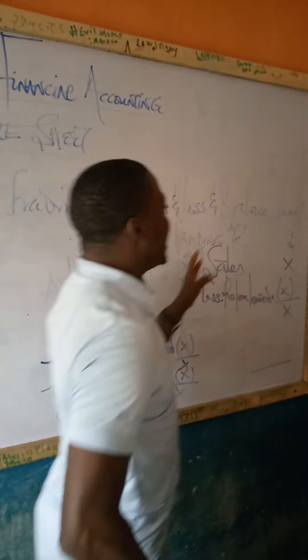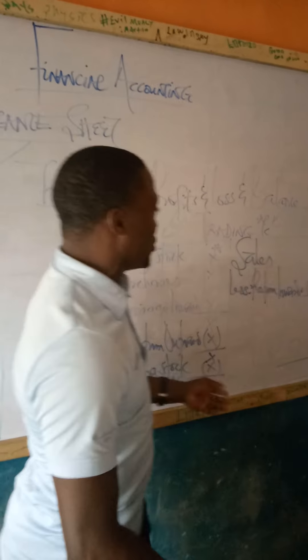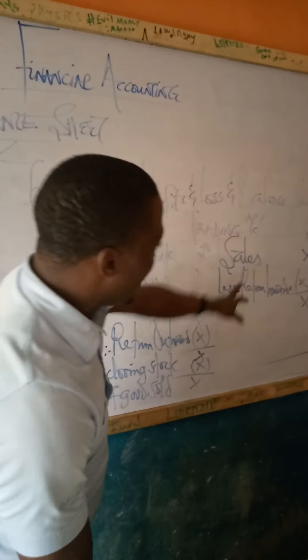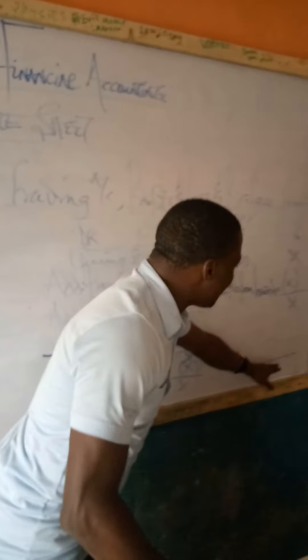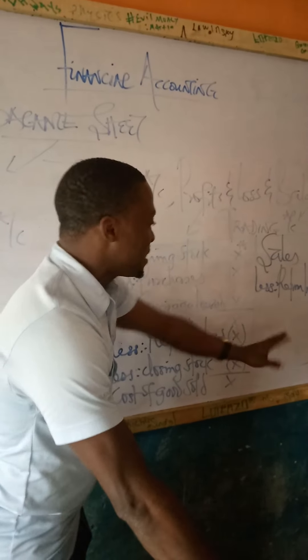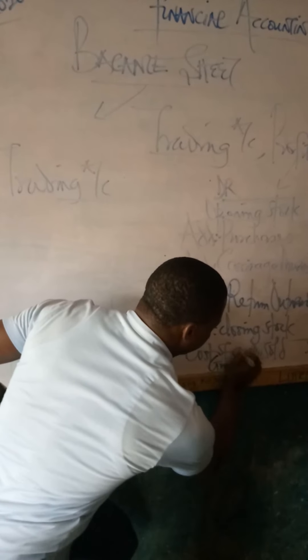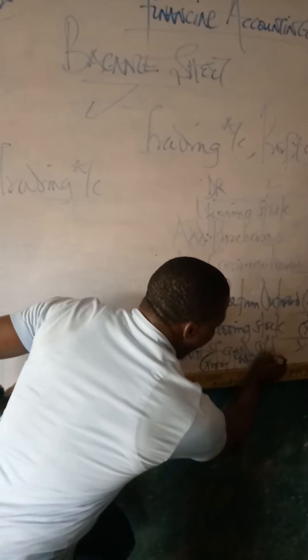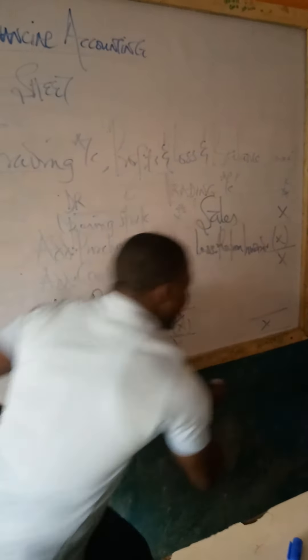It is not compulsory that in our account we must have gross profit — it depends on the figures. After we deduct returns inward from sales, we have our net sales. Then you compare net sales against cost of goods sold to arrive at our gross profit on the debit side. And if you add gross profit back, it will reconcile to net sales.